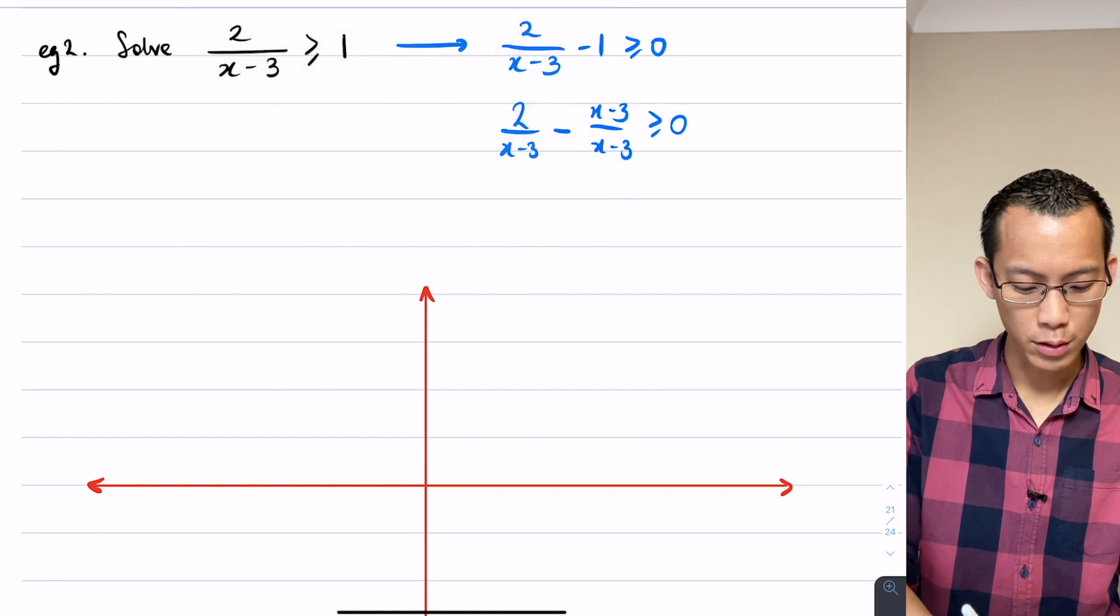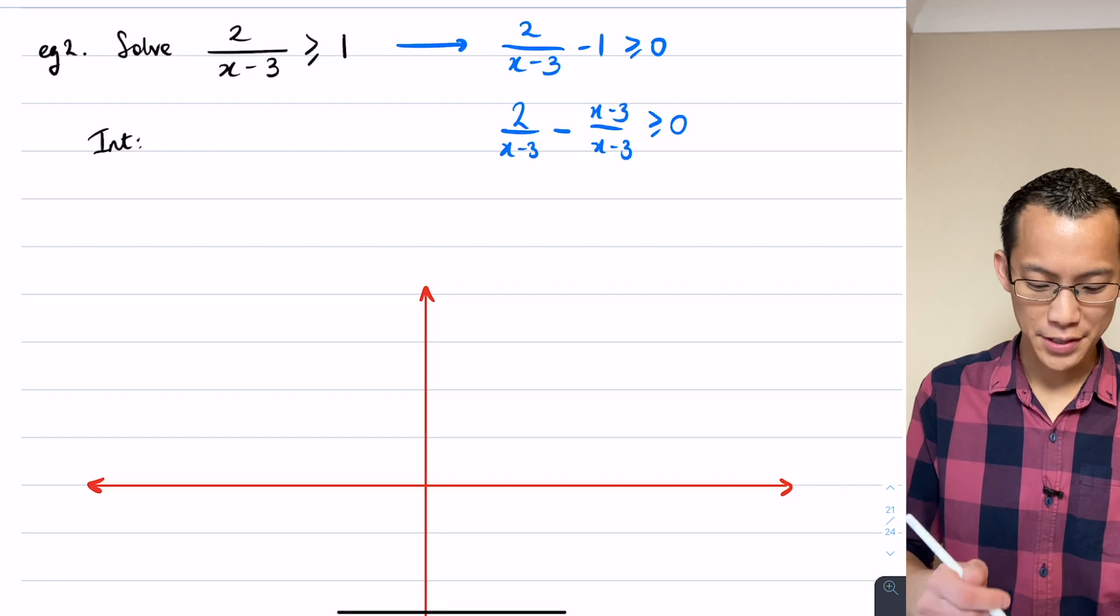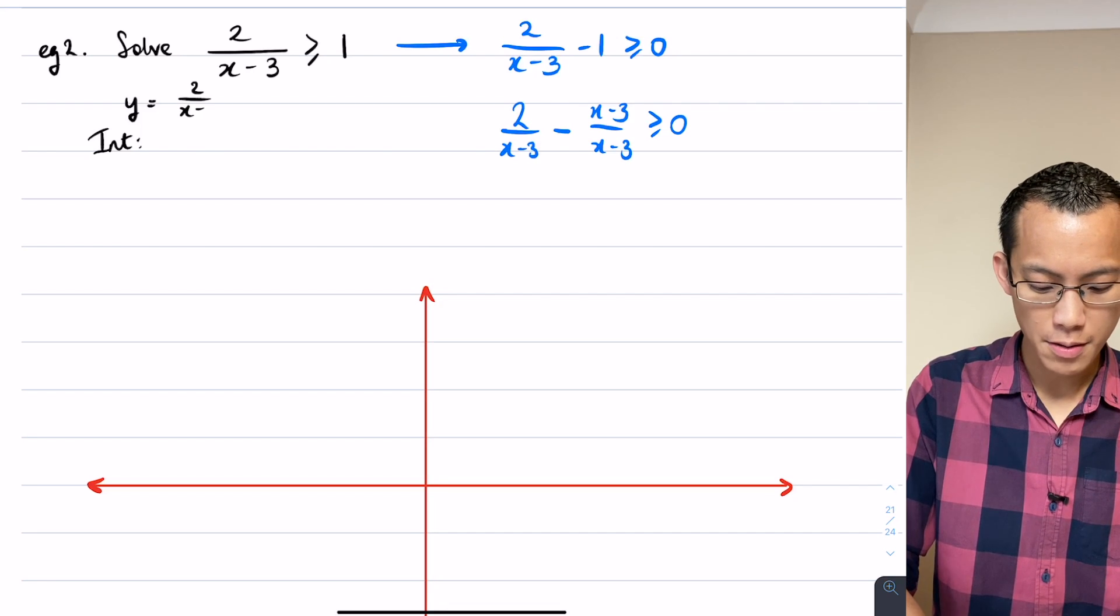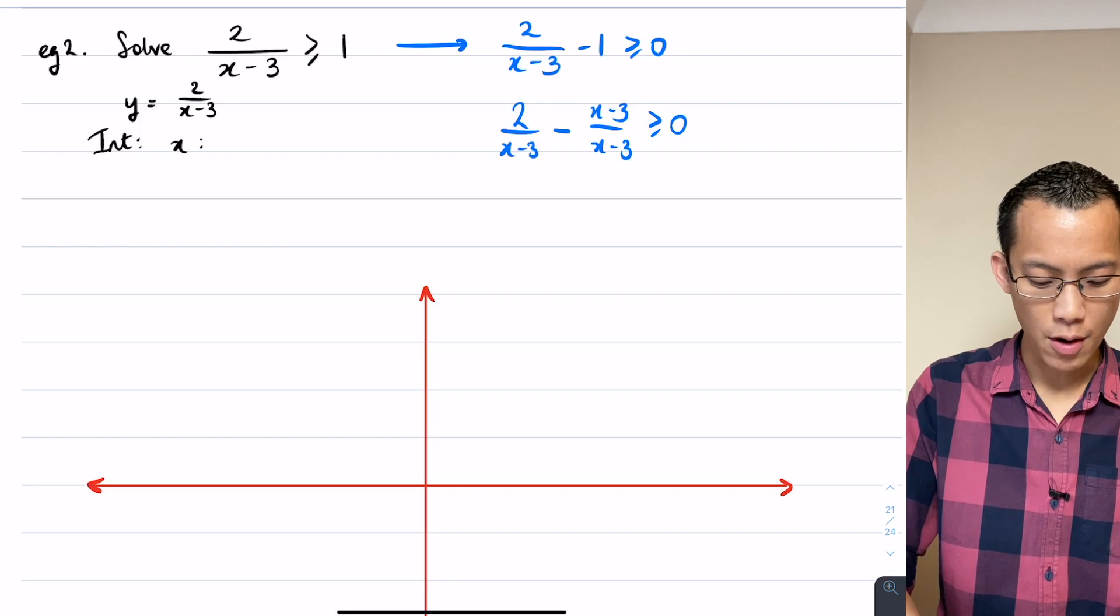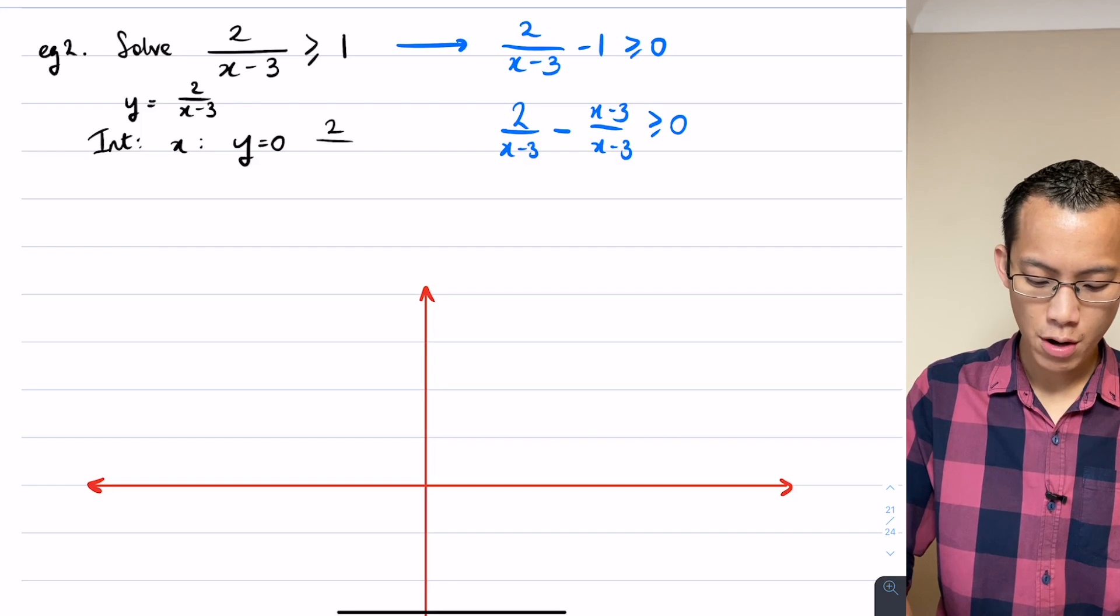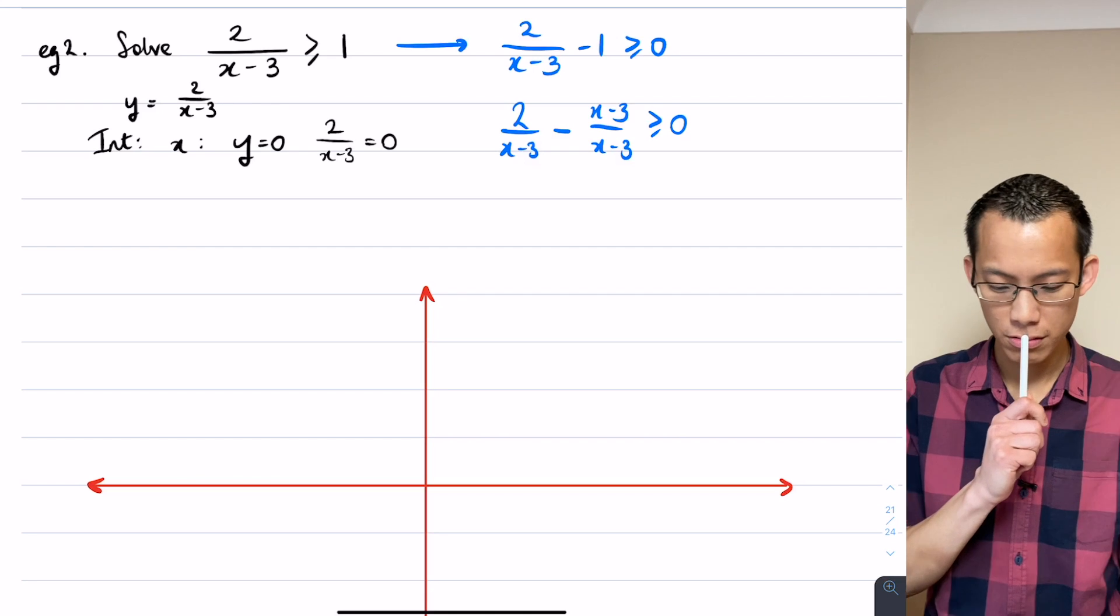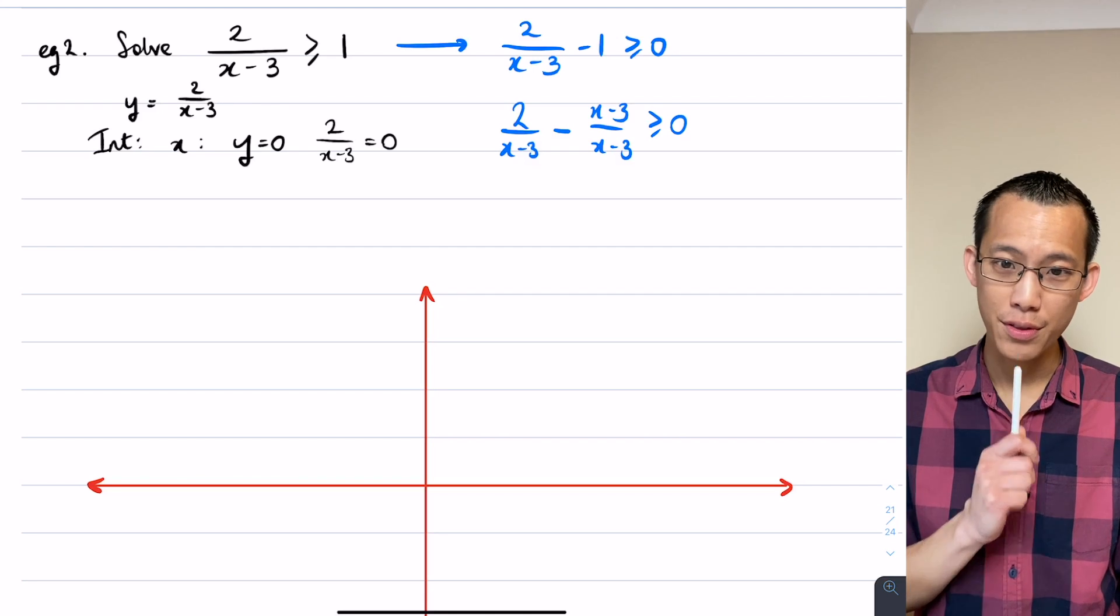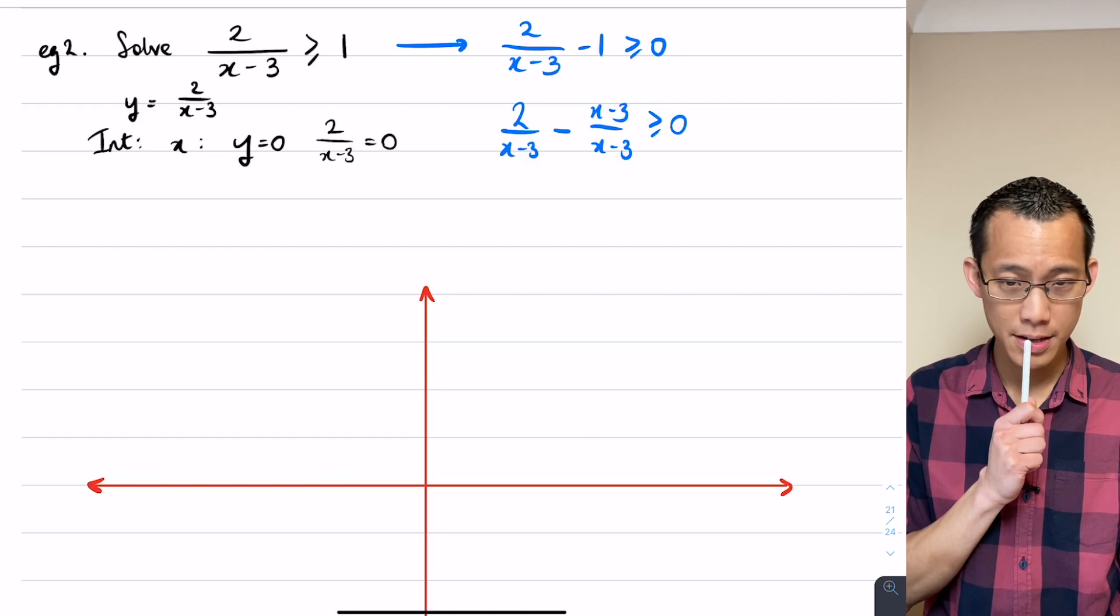So let's think about this for a second. Just like yesterday I'm gonna look for some intercepts and then I'm gonna look for some asymptotes. So for starters if I've got y equals 2 over x minus 3, let's look for an x-intercept first. So what I do is I say y equals 0. 2 over x minus 3, when is that equal to 0? Have a look at it closely. Is there a value that makes that happen?